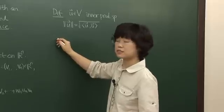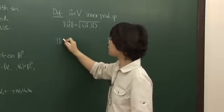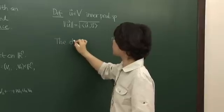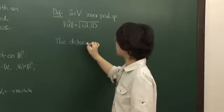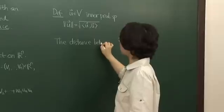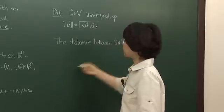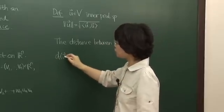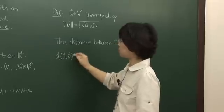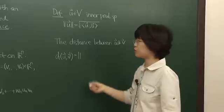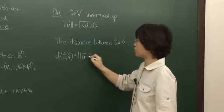Now let's define the distance. This is the distance between two vectors, between U and V. We denote it as usual, this is d(U,V). This is defined to be the norm of the difference, U minus V.